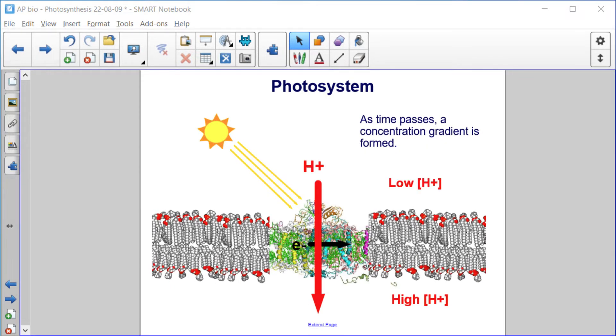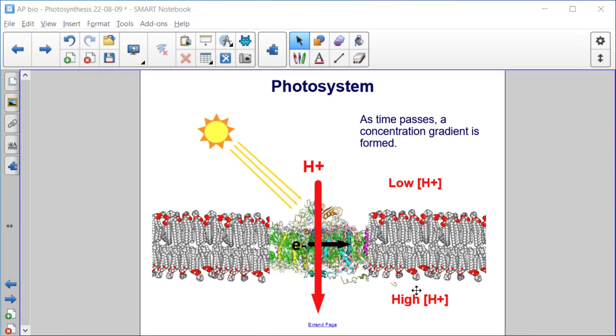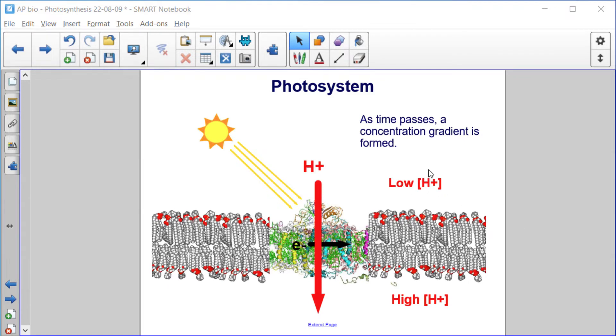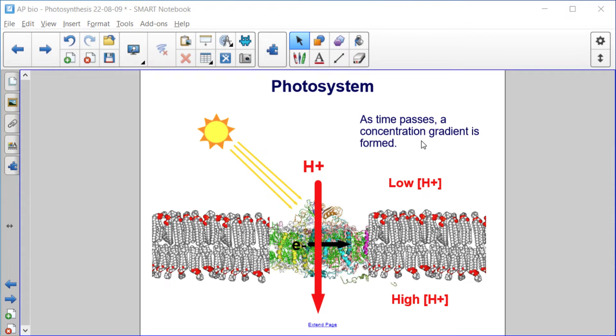Over time, we get a concentration gradient where we have high proton concentration inside and low proton concentration outside in the environment.